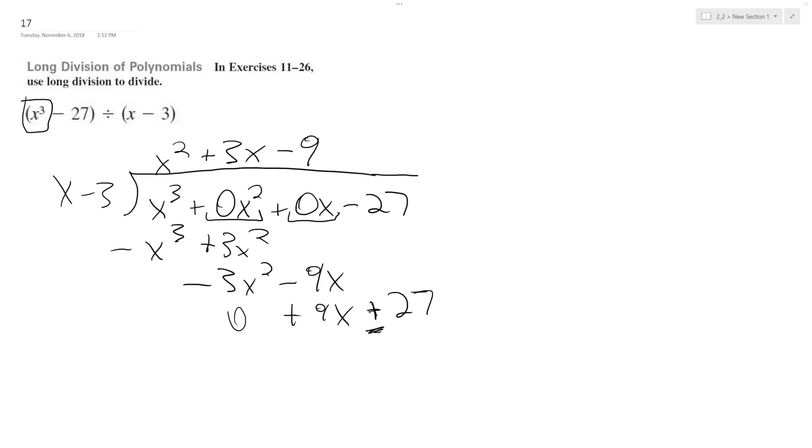This was supposed to be a positive 9. And this should have been a minus 27 switch of signs, so we get 0 out.